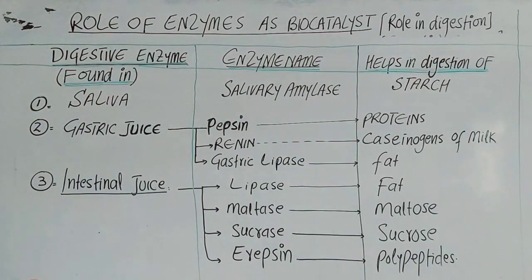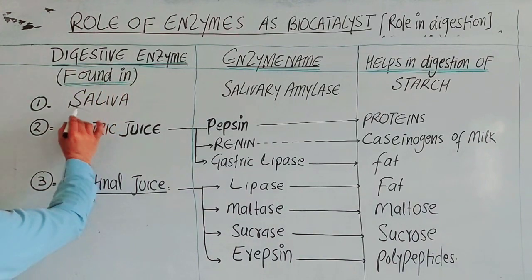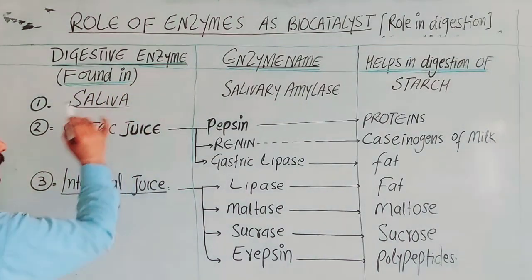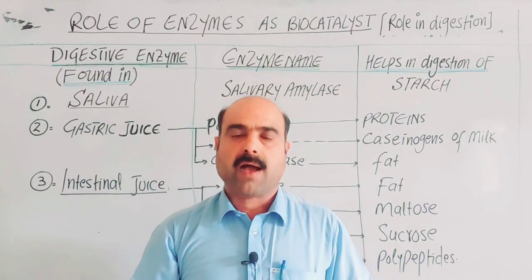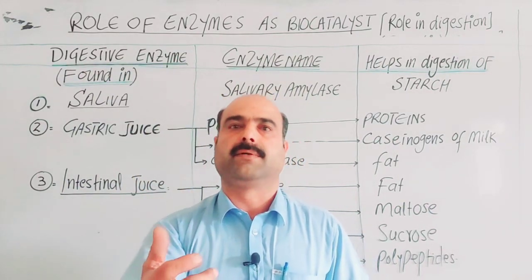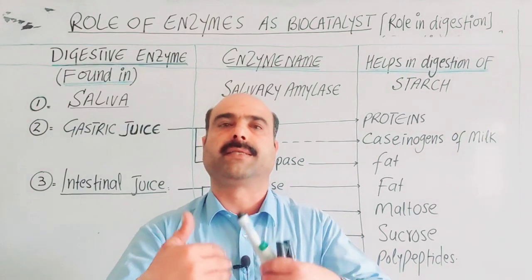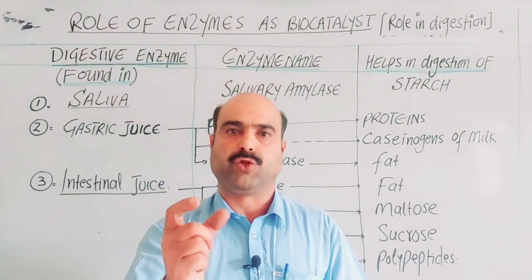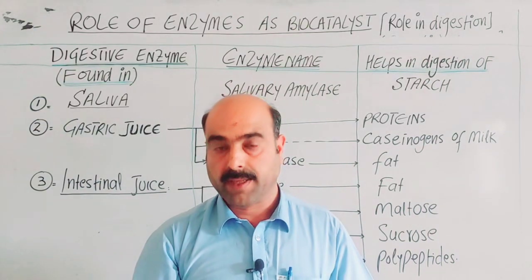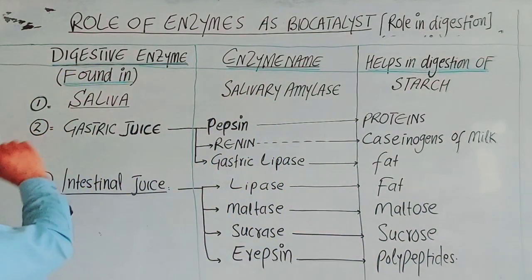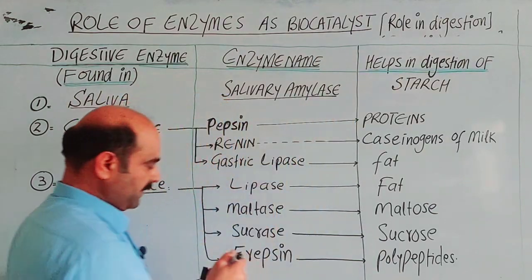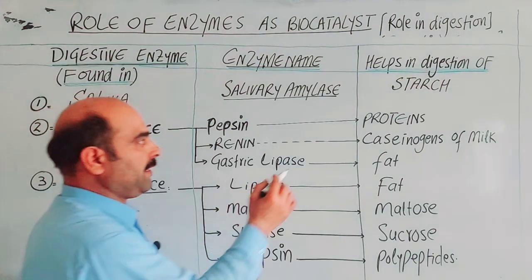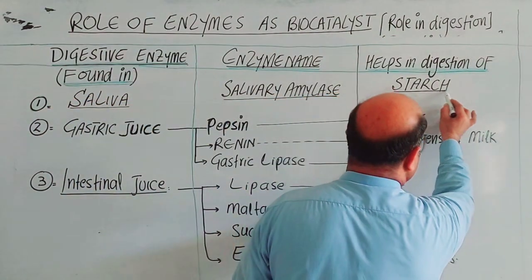The first digestive enzyme is found in saliva, in the mouth. In the mouth, the salivary gland secretes saliva. In saliva, there is an enzyme called salivary amylase.